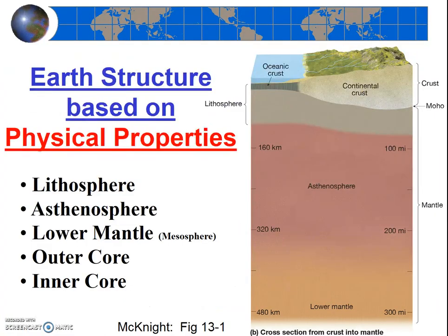Next, let's discuss the earth's layers based on how the different layers act—their physical properties. There are five layers if we focus on the physical properties of the layers. For our purposes, we're going to be primarily interested in whether the layer is solid or not solid.